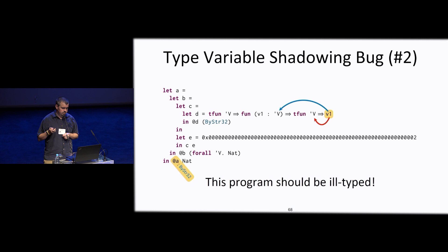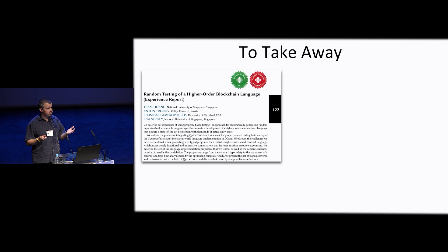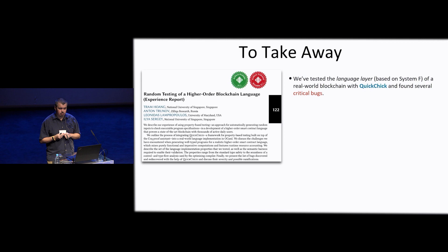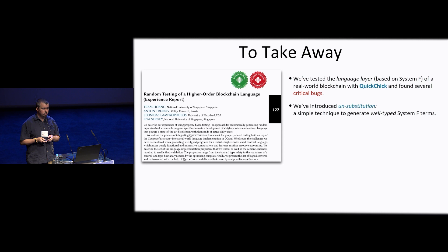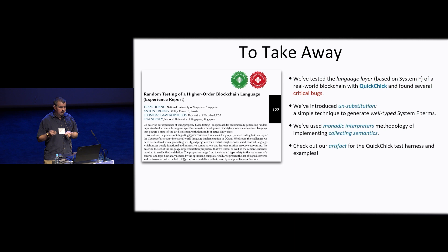To take away from our experience report: our experience testing a realistic language layer of a blockchain based on System F using QuickChick, discovering several critical bugs; a simple technique of unsubstitution for generating well-typed terms in System F involving type instantiation; and real-world usage of monadic interpreters for implementing collecting semantics to test static analysis. We have an artifact published on Zenodo — feel free to download it and take a look. Thank you.